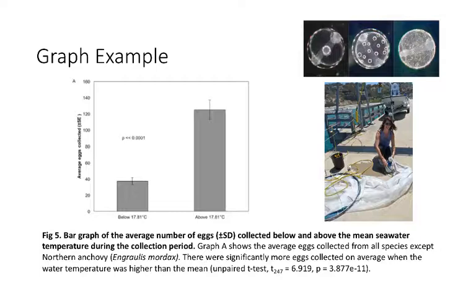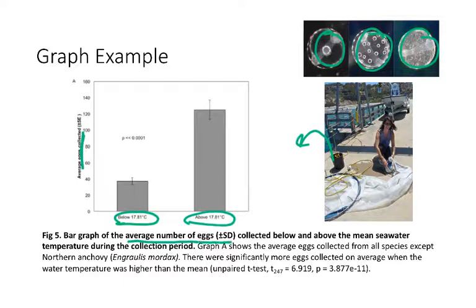Here's an example from that same data set, but now we're looking at a bar plot. Here just for context, remember that we are collecting fish eggs off of the pier here. This particular bar plot is showing the average eggs collected and they split that across two different categories: whether the water temperature was below 17.8, which was the mean temperature, or whether it was above 17.8. Here we want to use a graph. It's more appropriate to use a graph because we are showing data that has been analyzed in some way. The figure caption says we're showing the average number of eggs plus or minus the standard deviation. We had to do analysis to calculate this average, so that average is not raw data.